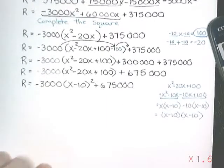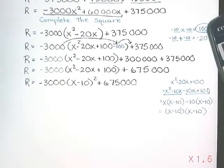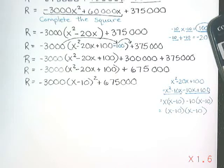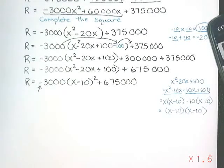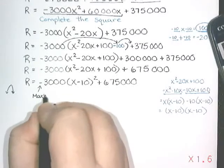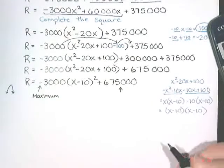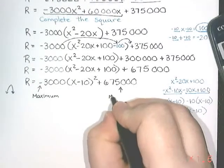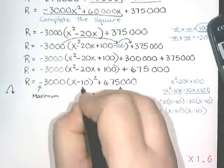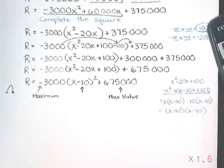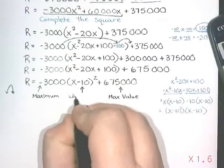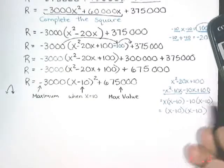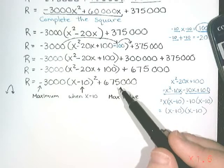We have now completed the square. The only thing left is to think about how this affects my answer — what does it tell me about the number of times they should change the price? The a-value is negative, so the parabola is upside down, meaning this has a maximum. The maximum or minimum value is always the k-value — the number at the end — so 675,000 is my maximum value. The part inside the bracket tells me the x-value where the maximum occurs, and we always do the opposite of what we see, so this is when x equals 10. We have a maximum of $675,000 when x equals 10.